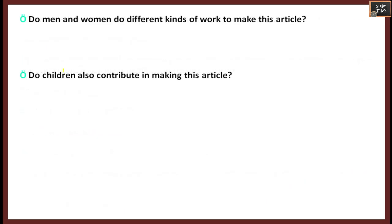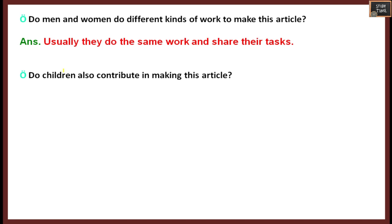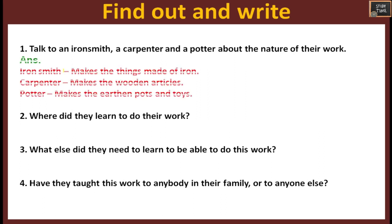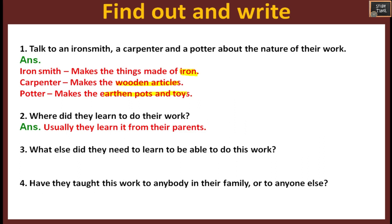Next: do men and women do different kinds of work to make this article? Usually they do the same work and share the tasks. Children also contribute in making these articles. Find out and talk to an iron smith, a carpenter, and a potter about the nature of their work. An iron smith makes things of iron; a carpenter makes wooden articles; a potter makes earthen pots and toys. They would have learned from their parents or elders, and they need a skill of imagination for making good pottery.